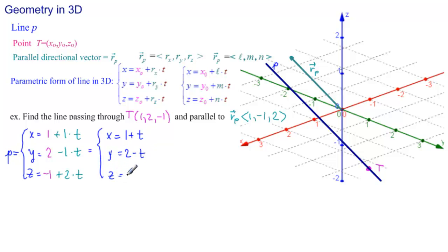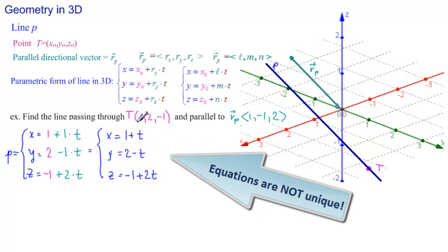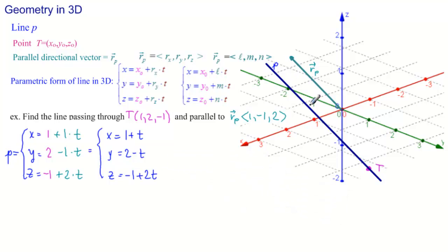Now, the line that passes through T and is parallel to rp is unique. There's only one such line. However, the set of equations is not unique. I could use a different point. I'd have to find it, but a different point than T, and substitute it here, and it would work.